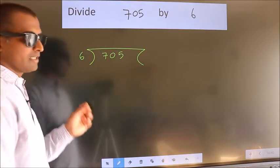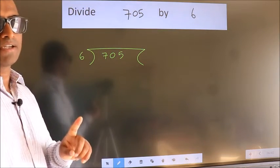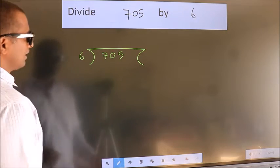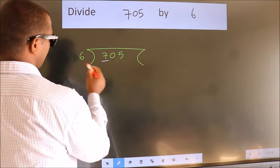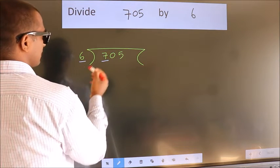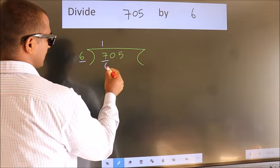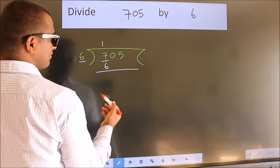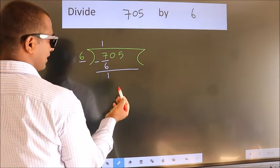This is your step 1. Next. Here we have 7, here 6. A number close to 7 in 6 table is 6 1s 6. Now we should subtract. We get 1.